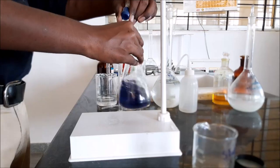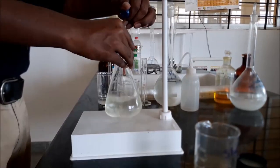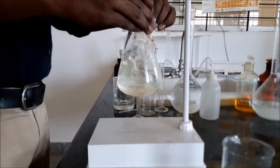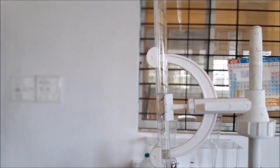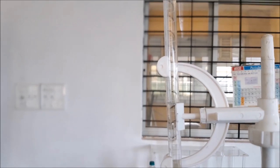Titrate until the blue color disappears or fades out. Note down the burette reading for the calculation of amount of residual chlorine that is present in the sample.